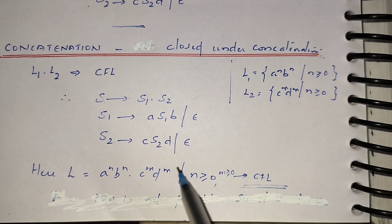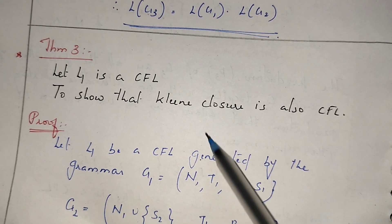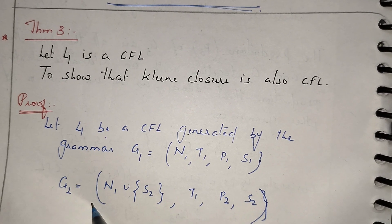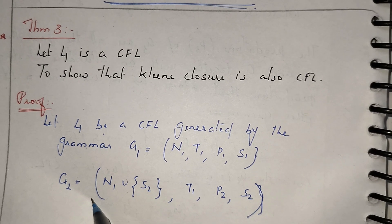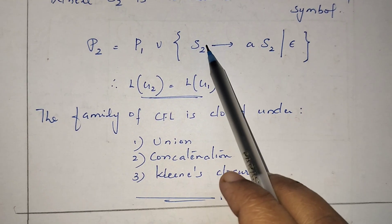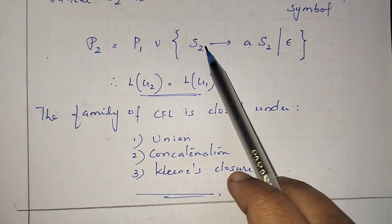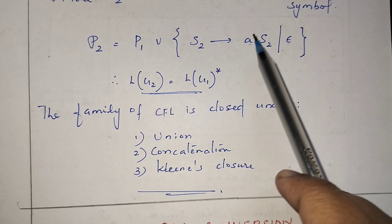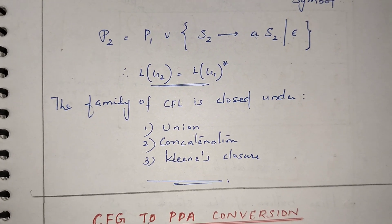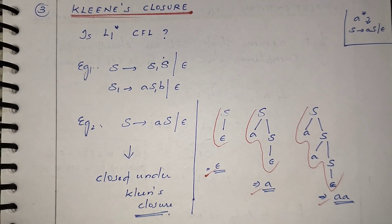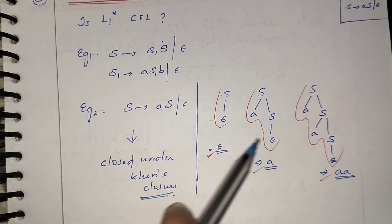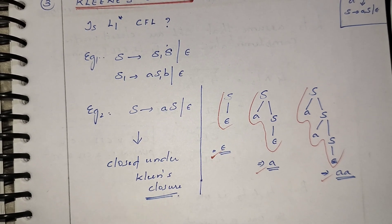The third closure property is Kleene closure, that is, a star (L*). The Kleene closure of a context-free language is also a context-free language. To write L* in grammar form, you write: the non-terminal gives itself concatenated with the same non-terminal, or epsilon — that is, S → S A | ε. So the family of context-free languages is closed under union, concatenation, and Kleene closure. This is an important topic for competitive examinations like GATE and NET.